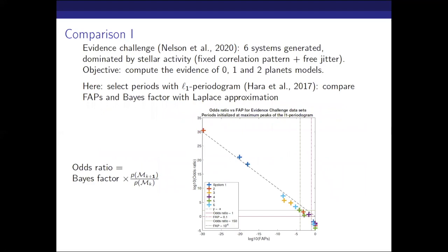Regarding the sensitivity to priors: the broader your prior on the semi-amplitude, the more it penalizes models with more planets. This is discussed in references dealing with eccentricity. Now for the comparison of FAP and Bayes factor: I'm considering the evidence challenge of Nelson et al. 2020 — six systems generated with at most two planets, dominated by stellar activity, with a fixed correlation pattern and a free jitter term in the model. The objective was to compute the evidence of zero, one, and two planet models to see if different numerical schemes yield the same values.